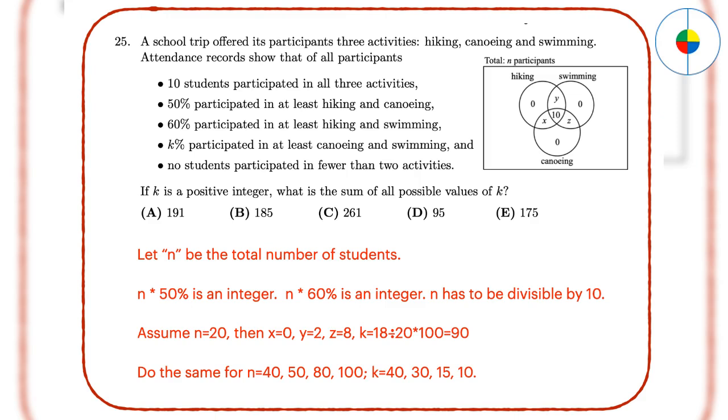Question 25: This is another tough guessing game. We need to use lots of variables. Let x be the number of students that participated in hiking and canoeing but not swimming. Let y be the number of students that participated in hiking and swimming but not canoeing. Let z be the number of students that participated in canoeing and swimming but not hiking. Suppose that the total number of students participating in the school trip was n. Since 50% participated in at least hiking and canoeing, n should be divisible by 2. Because 60% participated in at least hiking and swimming, n should also be divisible by 5. So n is divisible by 10. So you can try the value of n from 10 to 100, then get each value of x, y, and z. All the possible value of k will be 90, 40, 30, 15, 10. So the answer is 185.